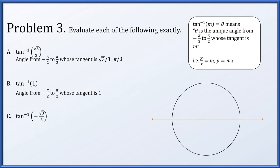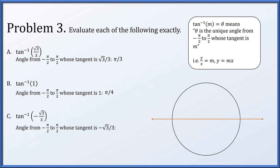In part b, we're looking for an angle between plus or minus pi over two whose tangent is one — in other words, y equals one times x. This intersects the circle twice, but only once with an angle between plus or minus pi over two. That angle is pi over four. In part c, we're looking for the angle between plus or minus pi over two whose tangent is minus root three over three. The line y equals minus root three over three x gives only one angle between plus or minus pi over two, and referring to a standard reference, this is minus pi over three.